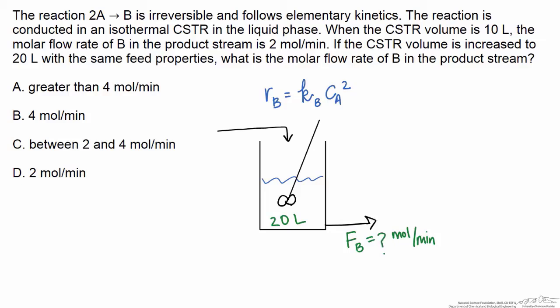The question is: do we expect the flow rate to stay the same? Do we expect that when we double the volume it will double the amount of product that we make? Or do we expect that it will be more than double, or somewhere in between? Please choose one of these answers to see if you're correct.